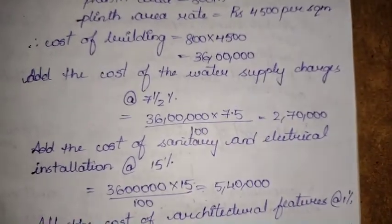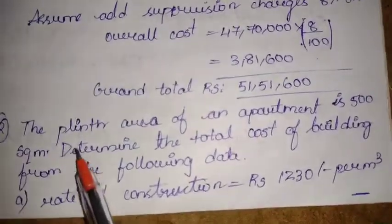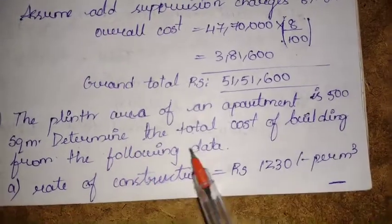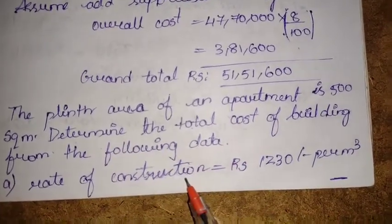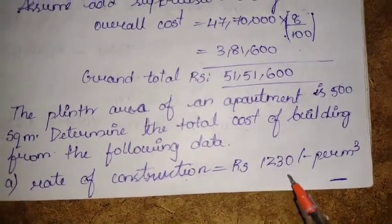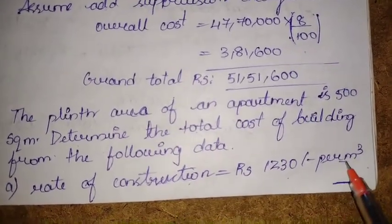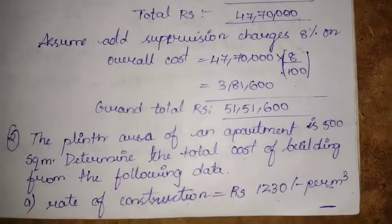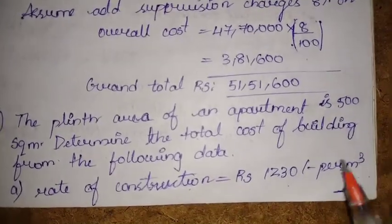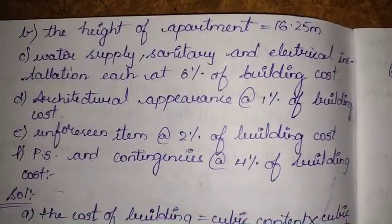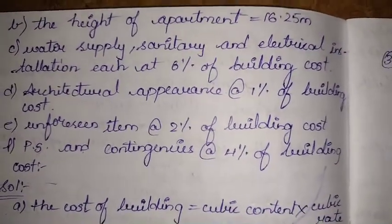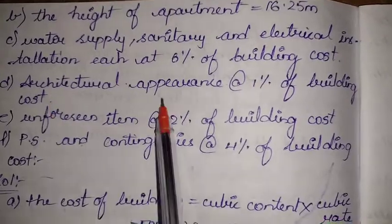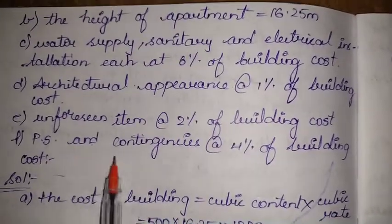Now the second example: the plinth area of an apartment is 500 square meters — determine the total cost of building from the following data. The rate of construction is 1230 rupees per cubic meter. We are also given the height of the apartment. Other charges include: water supply, sanitary charges, and electrical installation each at 6% of building cost; architectural appearance at 1%; unforeseen items at 2%; and PS and contingency at 4%.